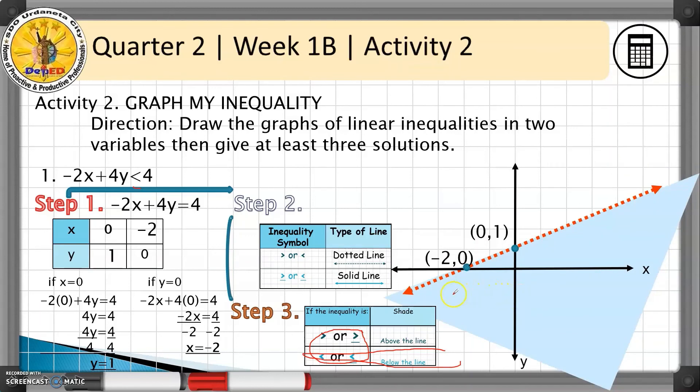This shaded region is the solution set of the inequality. Let's give at least three solutions that are within the shaded region: the points (0, 0), (2, 1), and (3, -1).